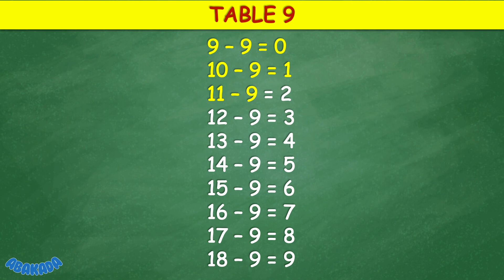Table 9: 9 minus 9 equals 0, 10 minus 9 equals 1, 11 minus 9 equals 2, 12 minus 9 equals 3, 13 minus 9 equals 4, 14 minus 9 equals 5, 15 minus 9 equals 6, 16 minus 9 equals 7, 17 minus 9 equals 8, 18 minus 9 equals 9.